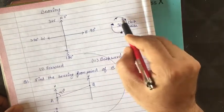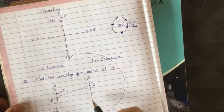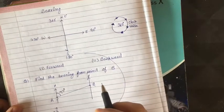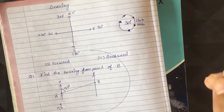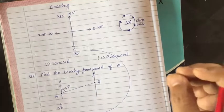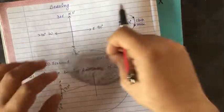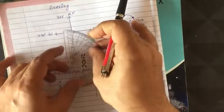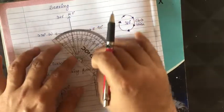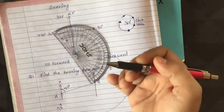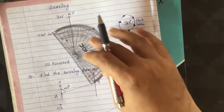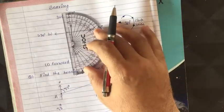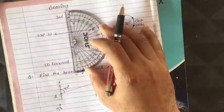Always remember while calculating bearing that the angle must always be measured clockwise. Hope you understood this simple topic of bearing. Just be careful about how you place your protractor and how to find the bearing angle. Hope you liked this video — thank you.